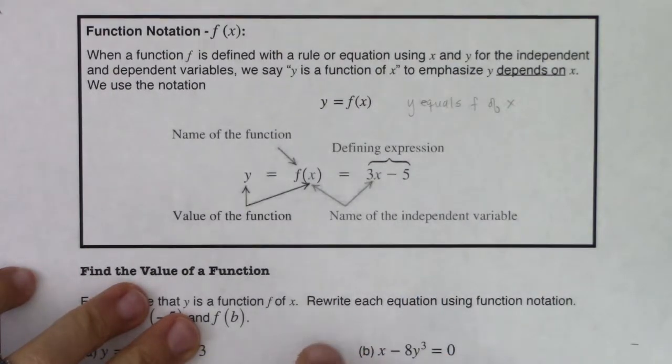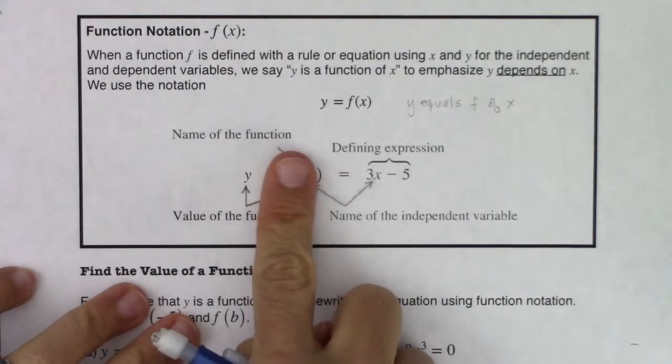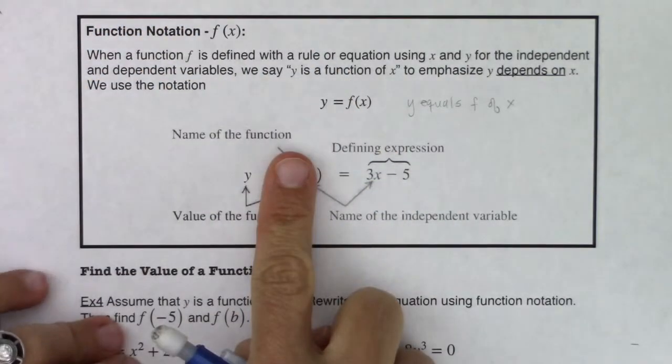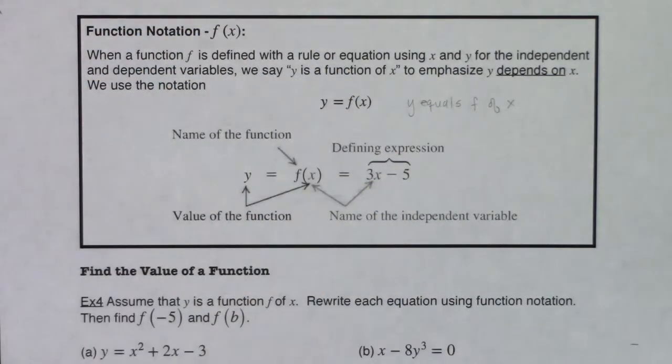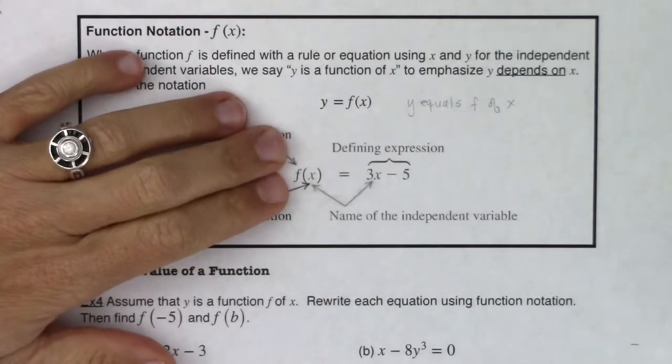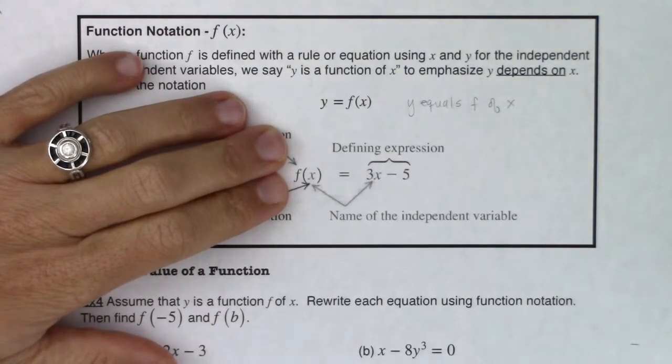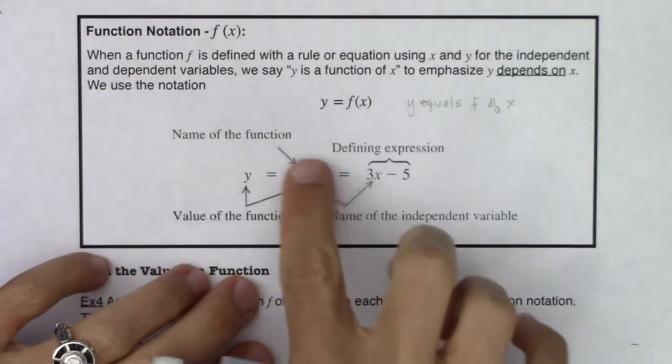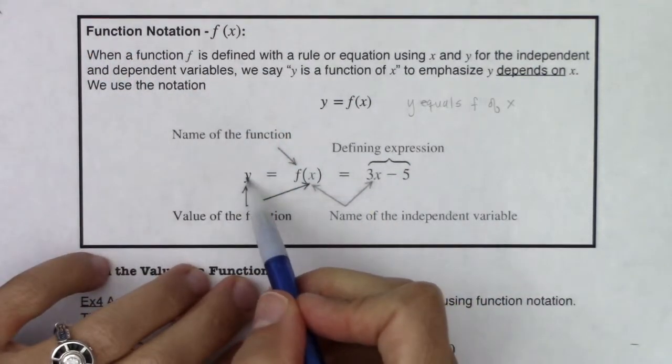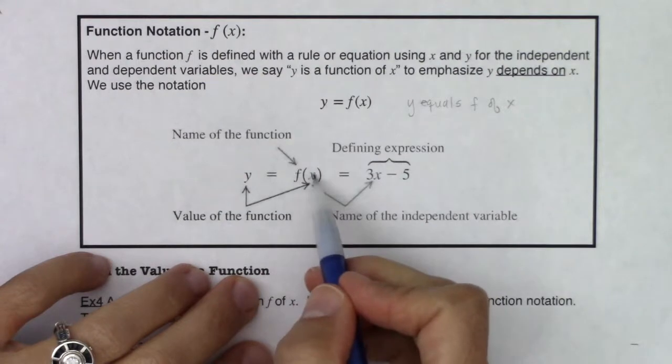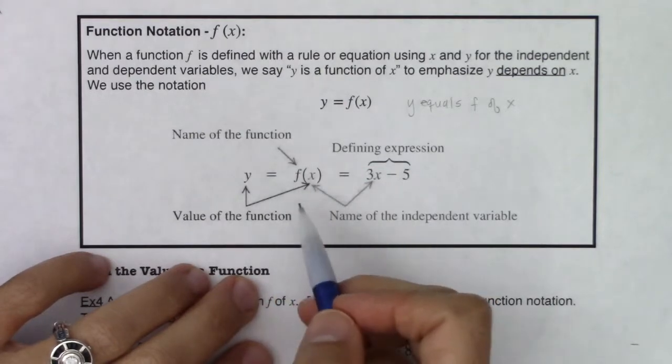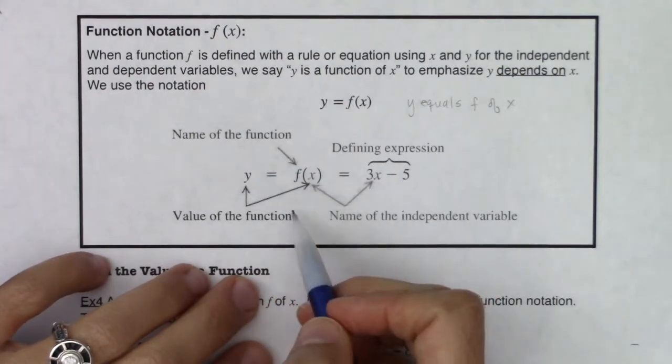Early on in math classes you're usually given this notation y equals 3x minus 5, and as we start to progress through higher math, we actually want to use the notation f of x is equal to 3x minus 5. This symbol collectively is still the y value, but when you write it this way you find out what you plugged in as well as what you got back out. So you can actually write an ordered pair with function notation.